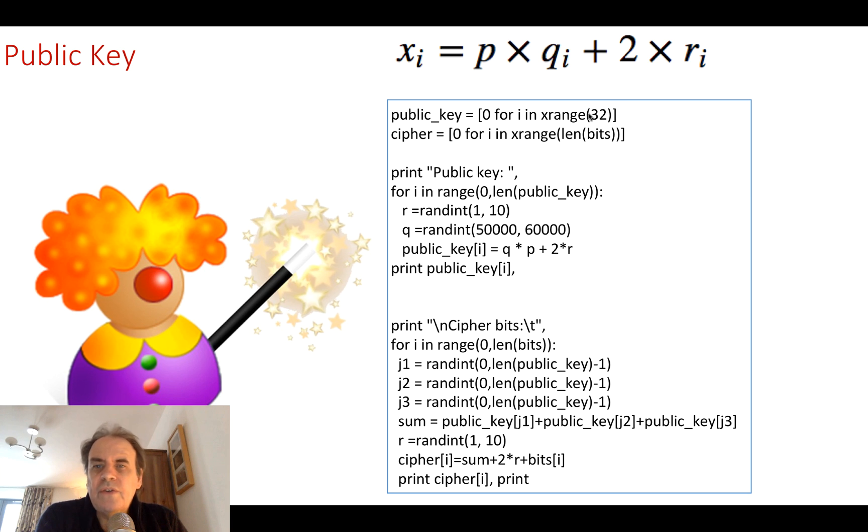So here we are. I'm going to use 32 values for the public key, and the same again for a number of values for our cipher. So the public key, in this case, I generate a random number, R, that's between 1 and 10. I'll just keep them low, and then a Q value between 50,000 and 60,000.